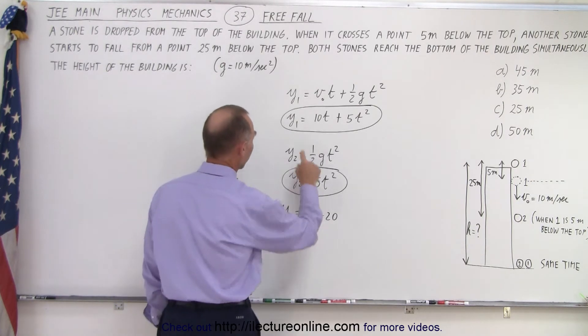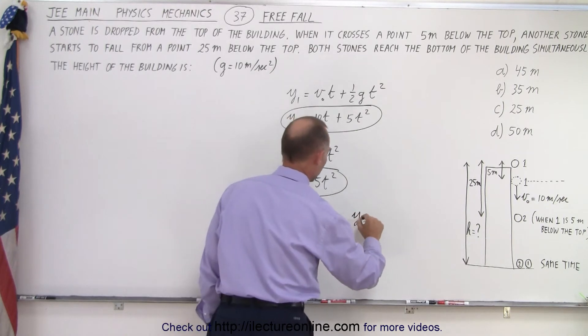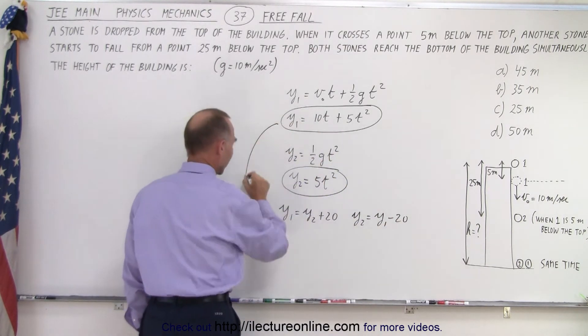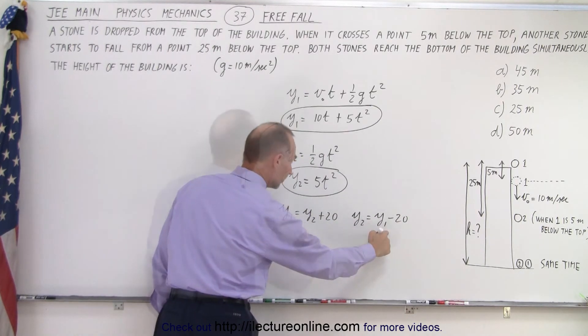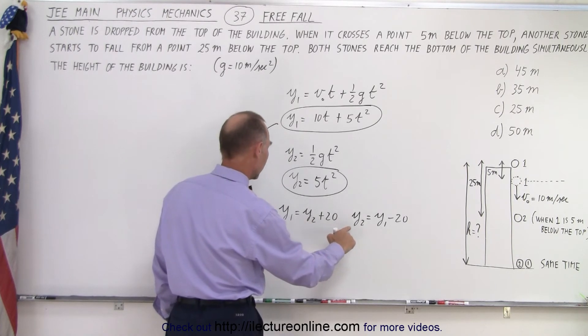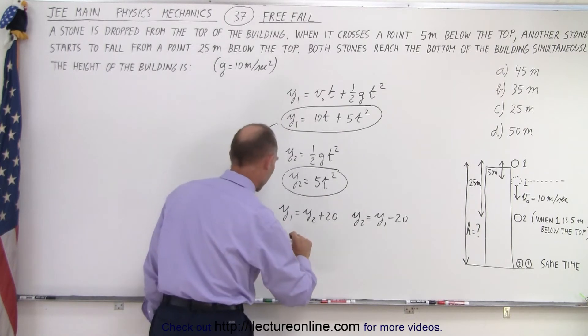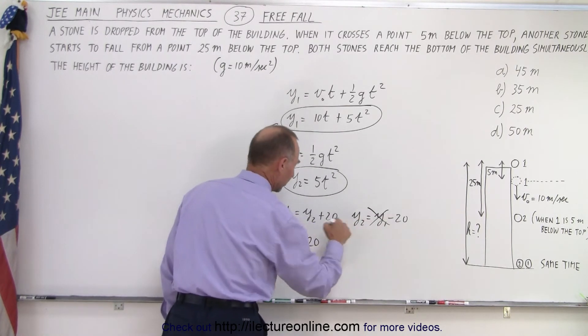So, what we could do is we could replace y1 by y2, which is y2 equals y1 minus 20. So, that means that this can be written as, instead of y1, we write y2 plus 20. We could write this as y2 plus 20. I guess we don't need this one. We just need that one.